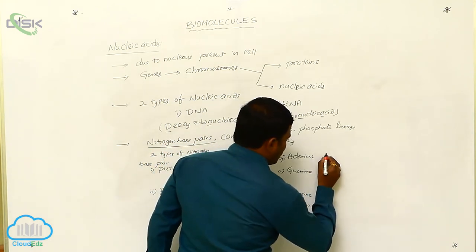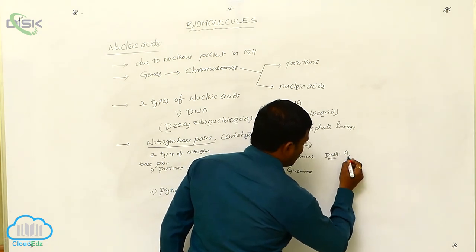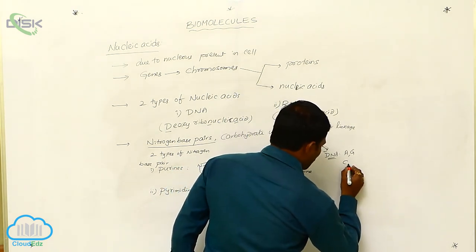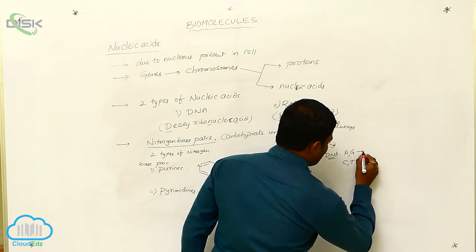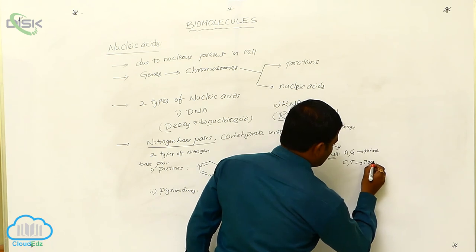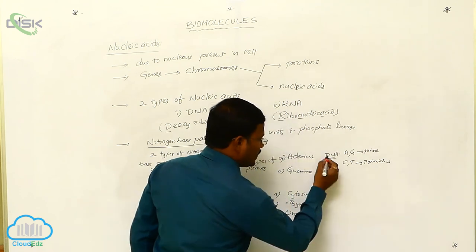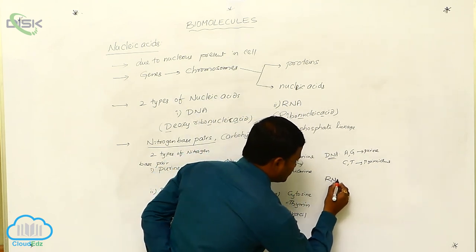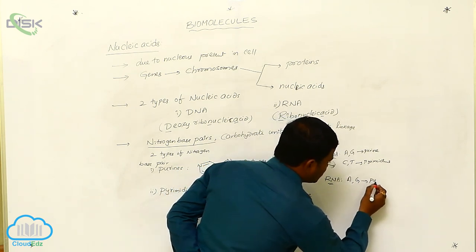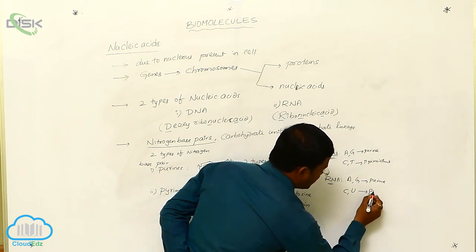In DNA, adenine and guanine are the purine bases, while cytosine and thymine are the pyrimidine bases. These are the nitrogen bases present in DNA. Similarly, in RNA, adenine and guanine are the purine bases, while cytosine and uracil are the pyrimidine bases present.